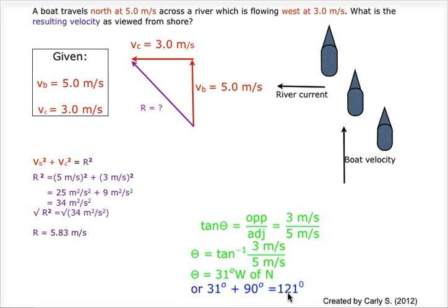A full circle bearing like your text issues is calculated in blue. And given a boat with a velocity of 5 meters per second north and a river with a velocity of 3 meters per second west, the resultant velocity of the boat as viewed from shore will be 5.83 meters per second at 31 degrees west of north.